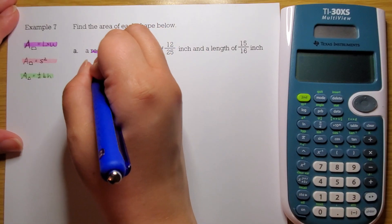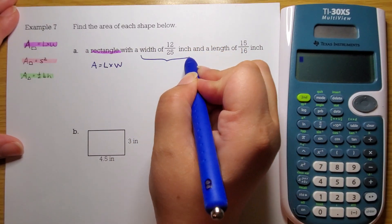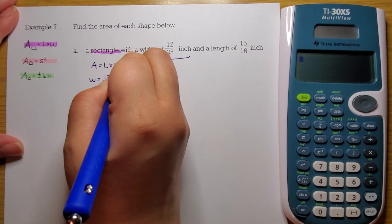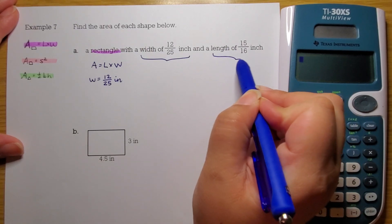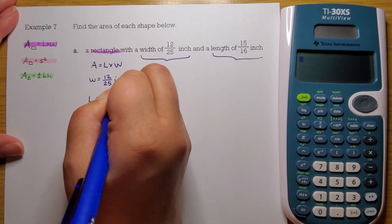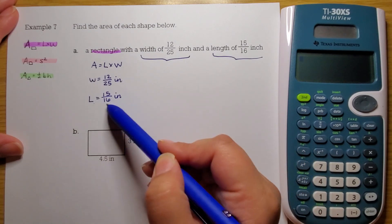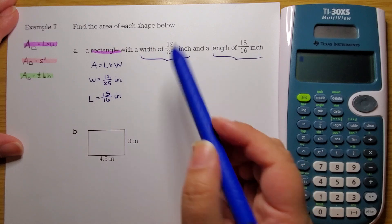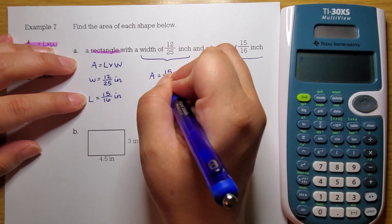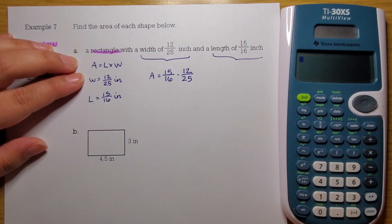Area is length times width. They have a width of 12/25 inches and a length of 15/16. I've got my formula. I know L is here and I know W, so I can go ahead and substitute into this formula.